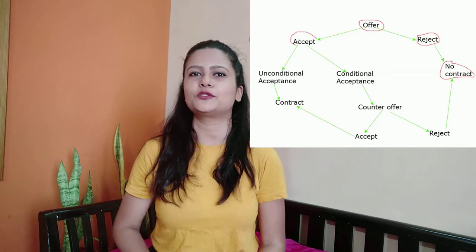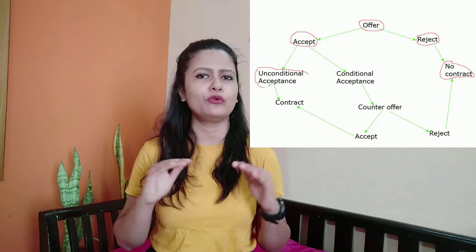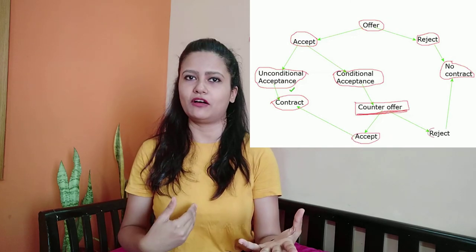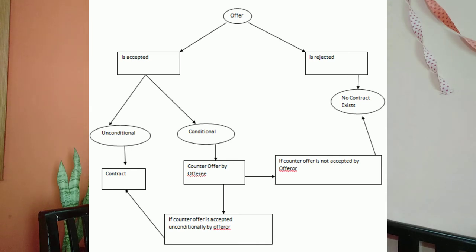So when an offer is made, you have two options: either to accept or to reject. If you are rejecting, it leads to no contract. If you accept, you can either accept it as a whole, which leads to formation of a valid contract, or you can put certain other conditions, which results in formation of a counter offer. Our positions would change — from an offerer I would become the offeree, and from an offeree you would become the offerer. Then it depends on me whether I want to accept or reject your offer. This is the main difference between an offer and a counter offer.